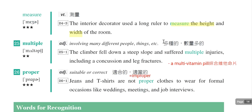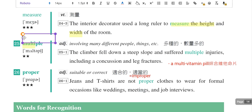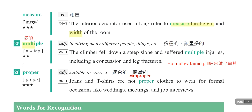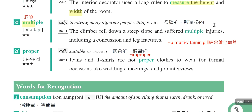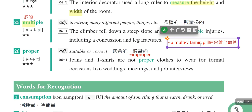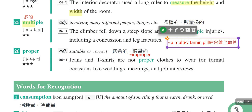第二十五个单字是multiple，是多种的、数量很多的。注意字首multi-表示多的意思。例句：The climber fell down at a steep slope and suffered multiple injuries，就是遭受了多重的伤害。补充：a multi-vitamin pill就是综合维他命片，multi-也可以这么用。